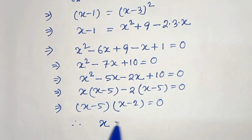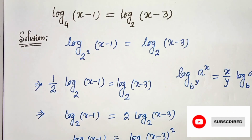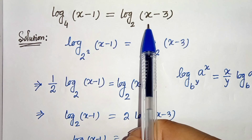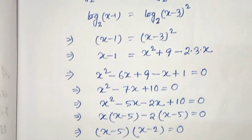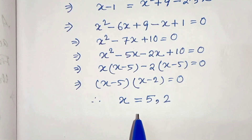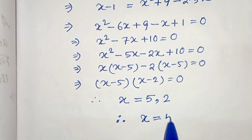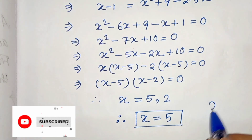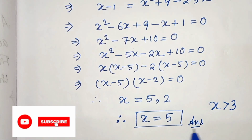Therefore we have two solutions: x equals 5 and x equals 2. But the given equation is defined only for x greater than 3, otherwise the log of (x minus 3) part becomes undefined. So we take the solution x equals 5, since x equals 2 does not satisfy x greater than 3. This is our final solution. Thanks for watching.